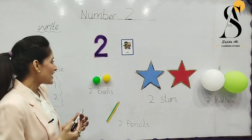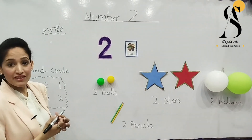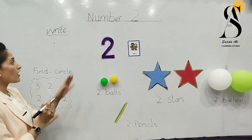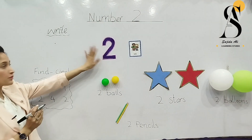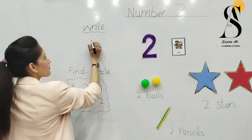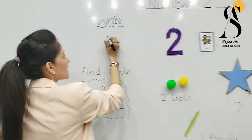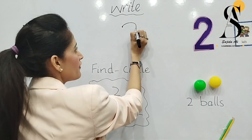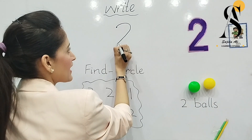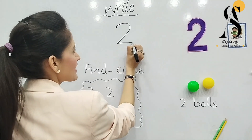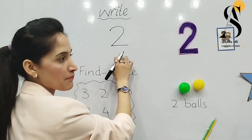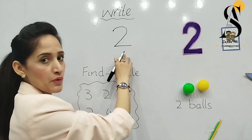Let's learn the number formation of two. We are going to make a curve, then a slanting line, then a sleeping line. This is number two.